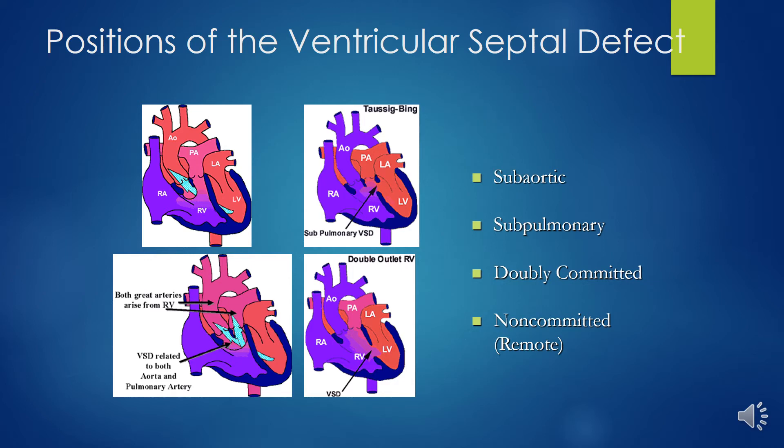In the non-committed type, the VSD is removed from both great vessels and located below the conal septum or at the junction of the conal and muscular interventricular septum. The distance is more than the diameter of the aortic valve. Presentation is similar to the subaortic variant depending on the presence of pulmonary stenosis.